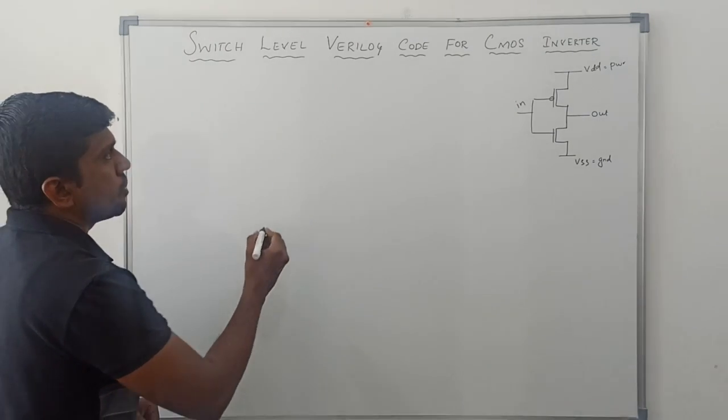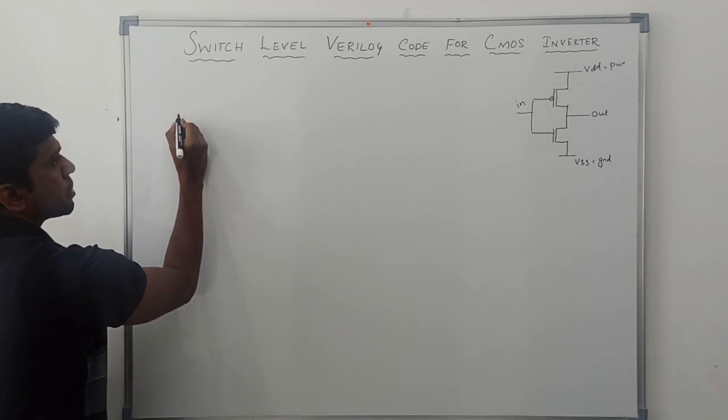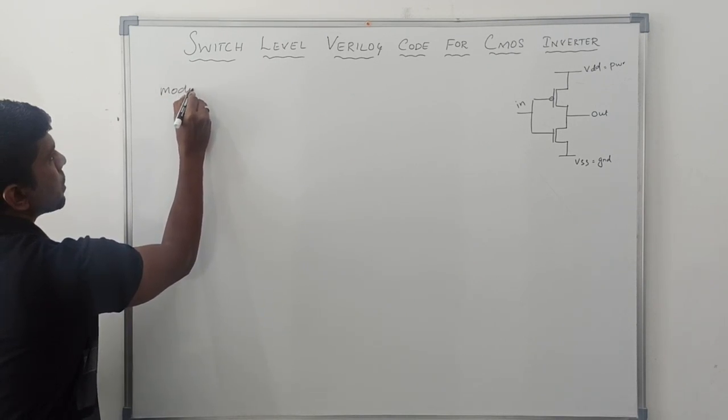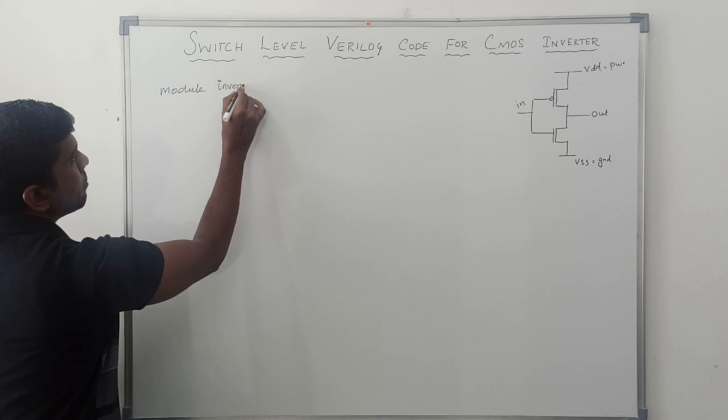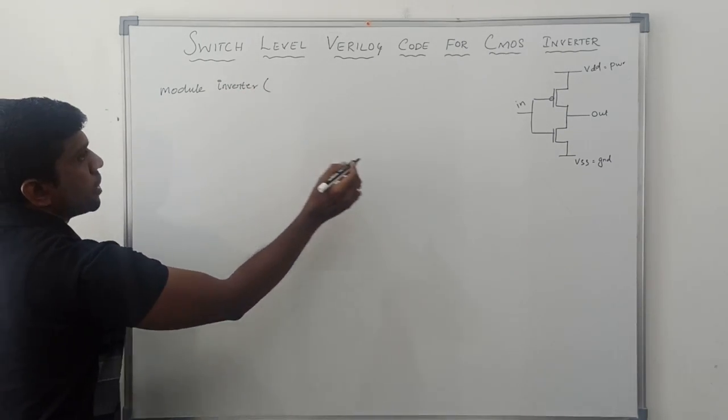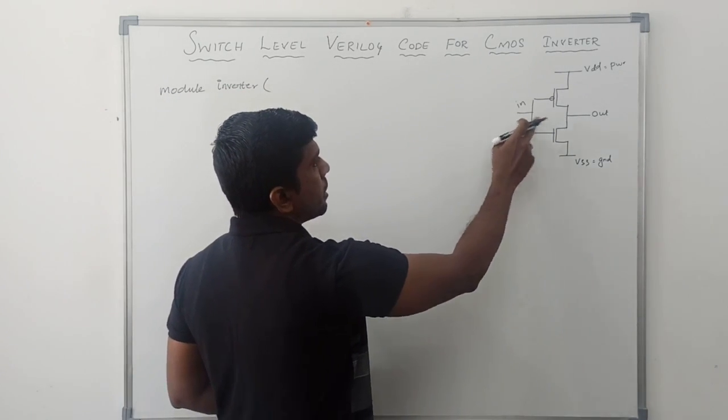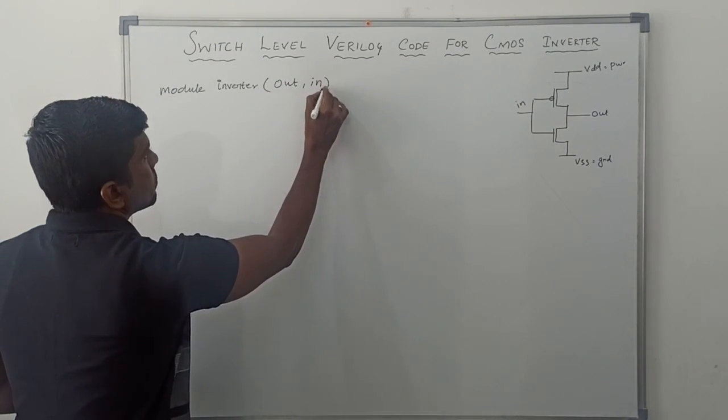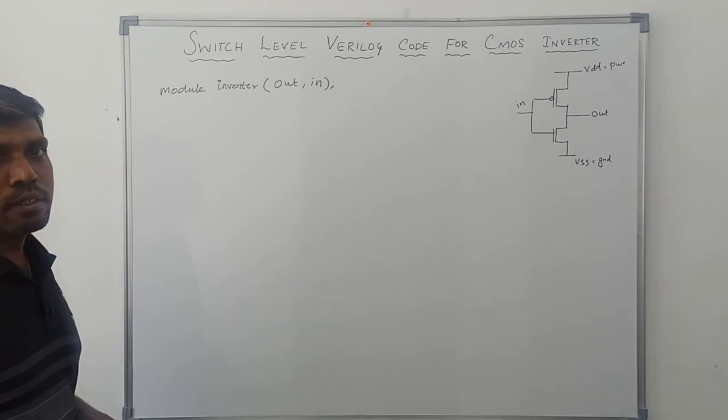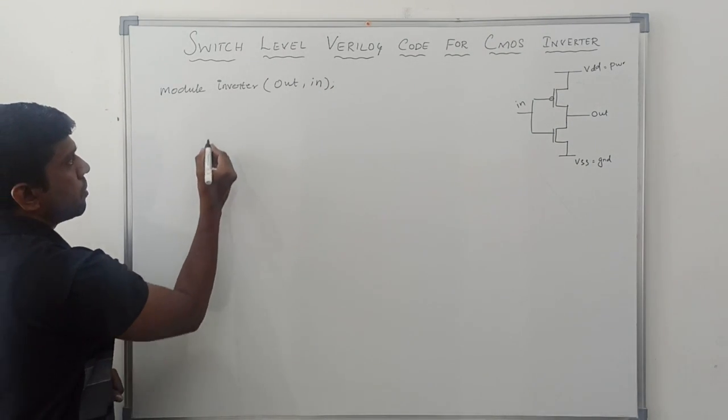Now I am going to write the Verilog HDL code for this CMOS inverter. As usual, you first write module, then the module name inverter. In this circuit, we have two variables: in and out.